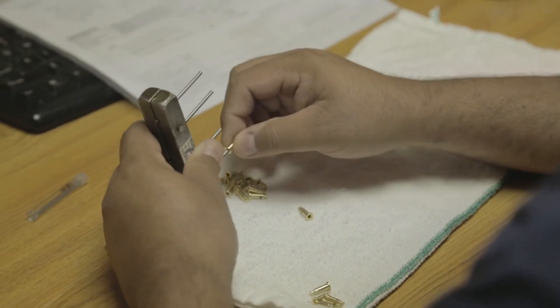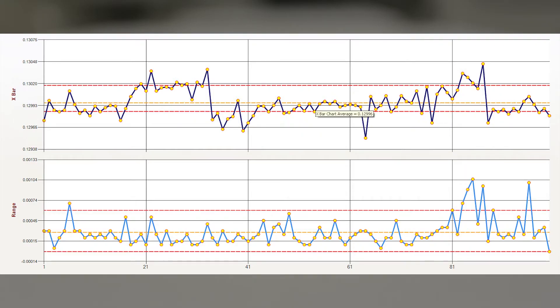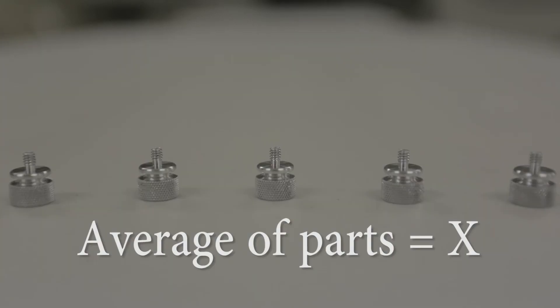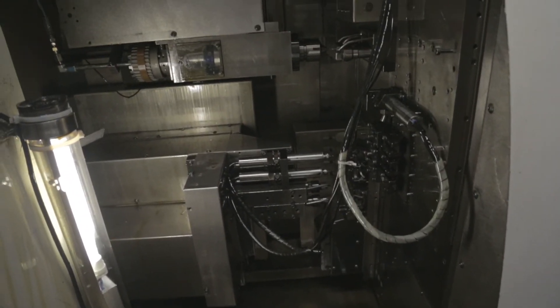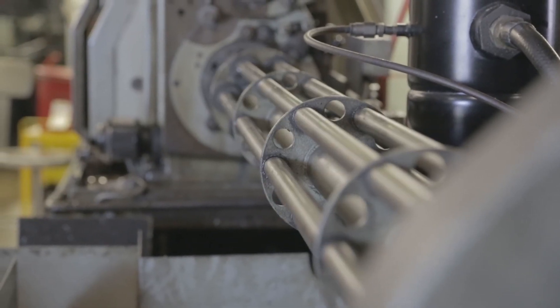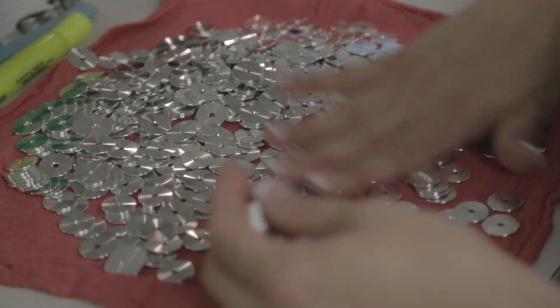What this means is we can measure a small control group of parts and determine the overall quality trend of the whole production run. From this information, we can also judge when we need to make adjustments to the process or make major changes to assure only the highest quality parts go to our customers.